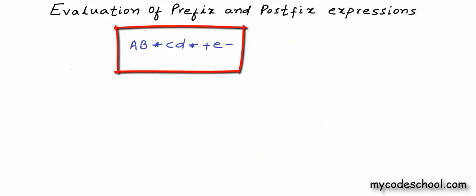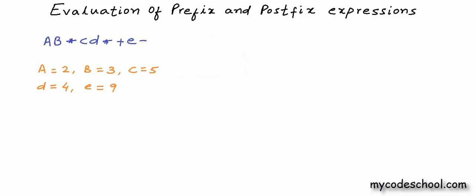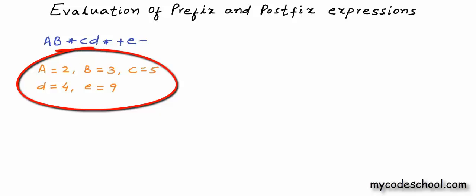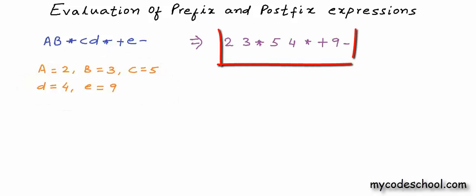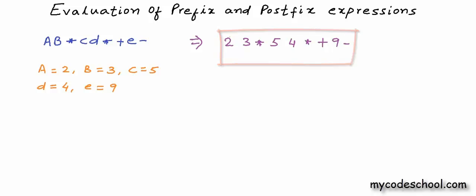So we have this postfix expression here and we want to evaluate this expression. Let's say for these values of variables A, B, C, D, and E — we have this expression in terms of values to evaluate. I will first quickly tell you how you can evaluate a postfix expression manually. What you need to do is scan the expression from left to right and find the first occurrence of an operator. Here, multiplication is the first operator.